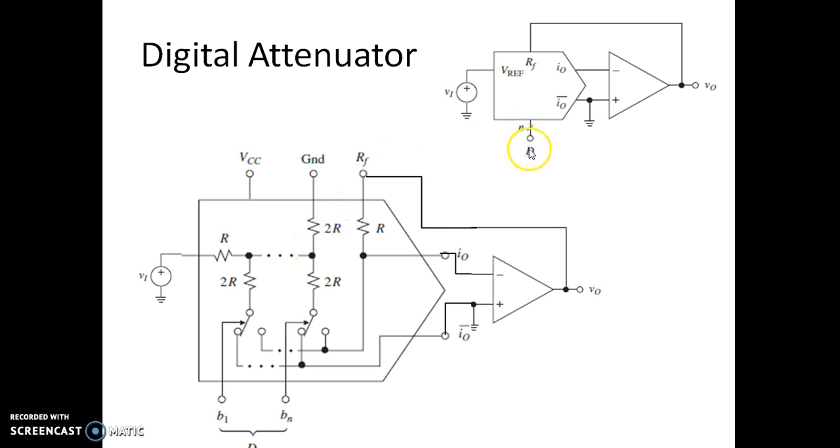And we have the input voltage D or input combination D1 to Dn. And these are the switches which can be realized using back-to-back connected inverters, and of course a MOS transistor to realize the switch as we discussed in the previous video. Now we shall see how does this digital attenuator work.